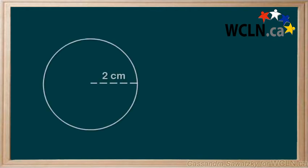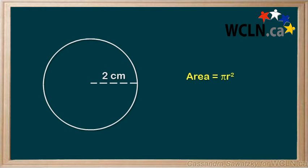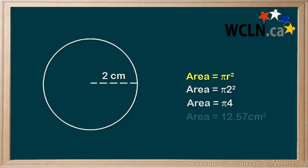One last example. This time, let's look at a circle. The equation is area equals pi times r squared. This means that we only need to know the radius of the circle to figure out the area. And remember that radius is half of the diameter. So we can take our radius, put it into our equation. So, 2 squared is 4, and then multiply by pi to get 12.57 cm squared.